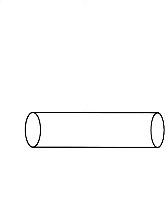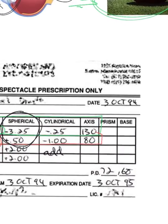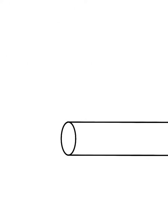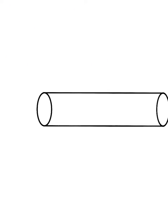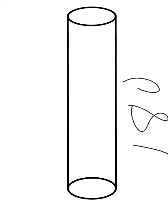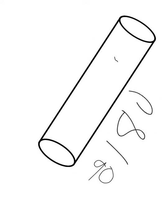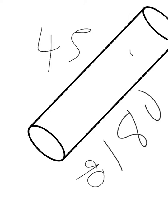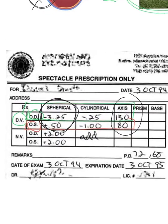The third and last number is the axis number. The axis number represents the position of the cylinder. For example, if the cylinder is flat like this, it would be 180. If I rotate the cylinder upright like this, it would be 90. If I rotate it diagonally like this, the axis would be 45, and so on. The axis is just the position of the cylinder.